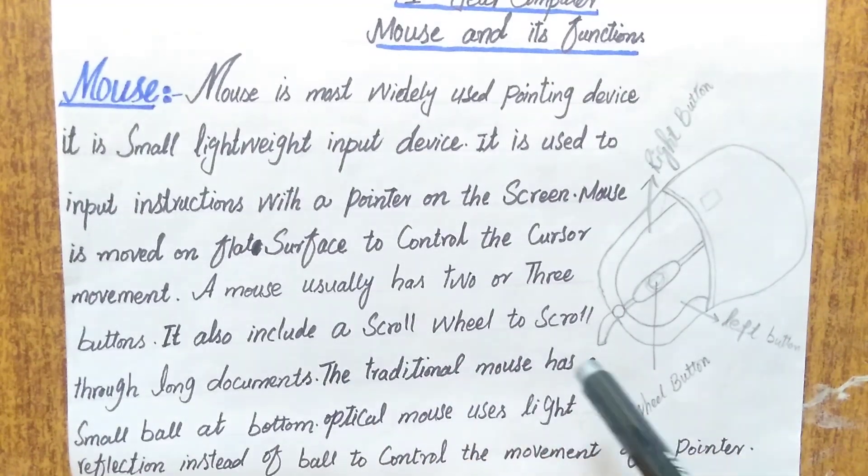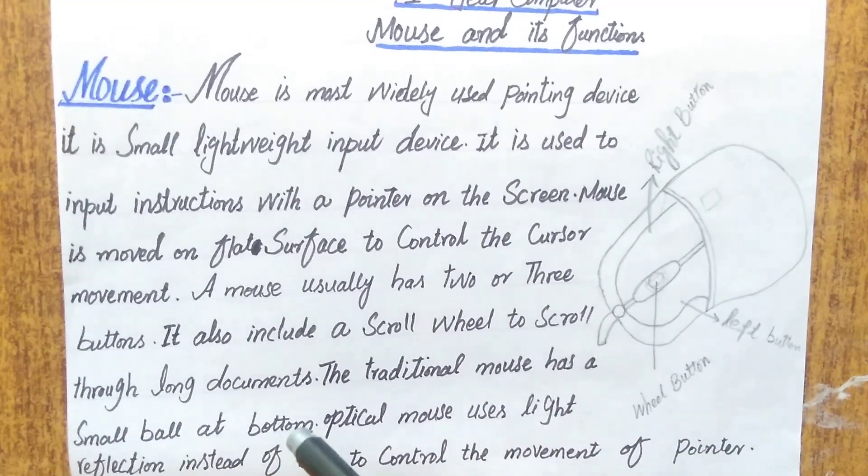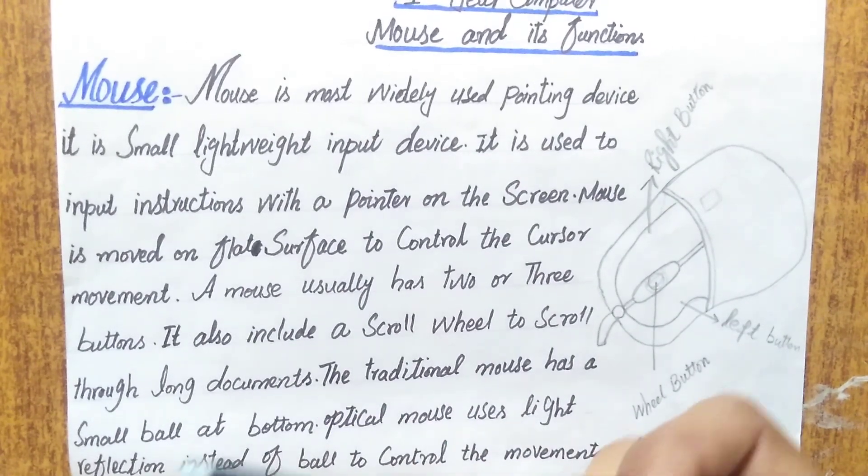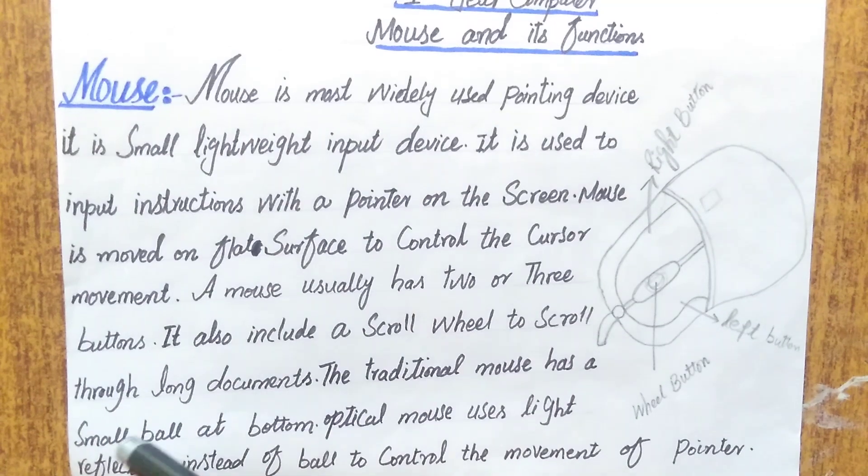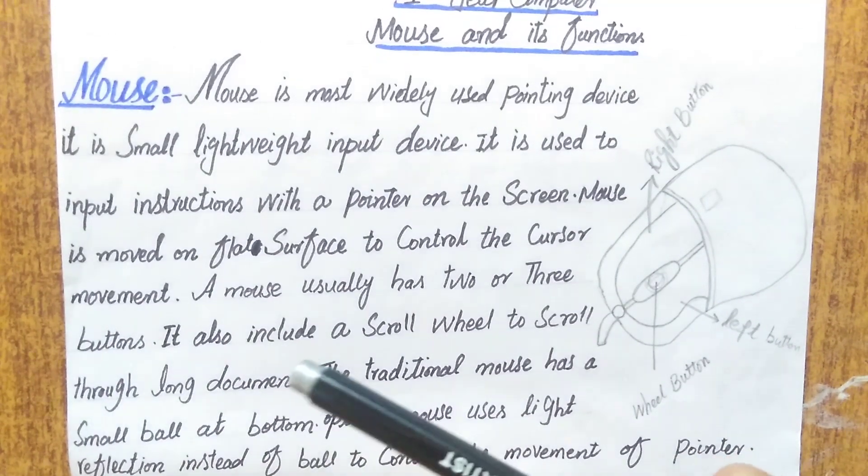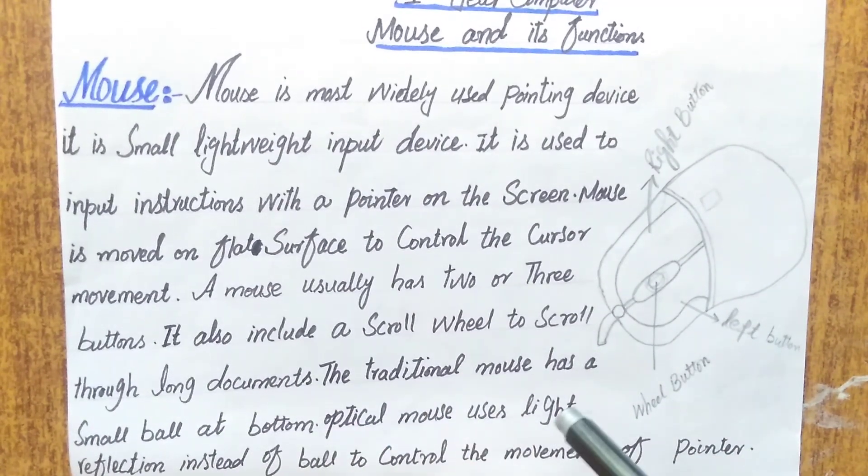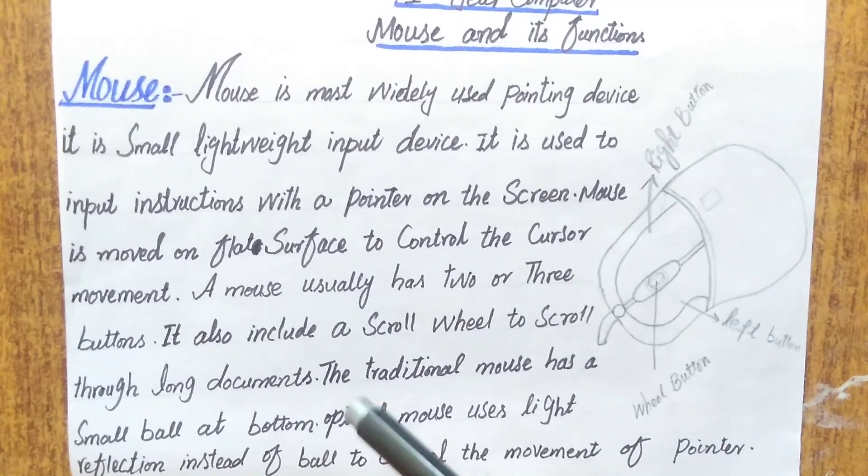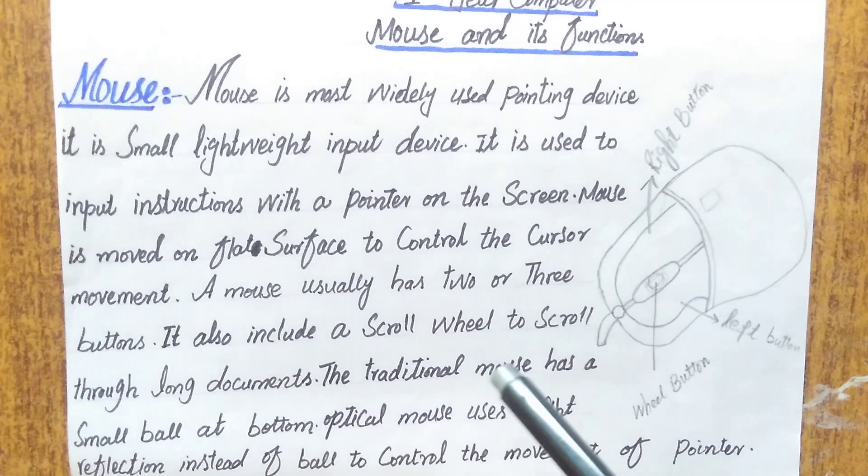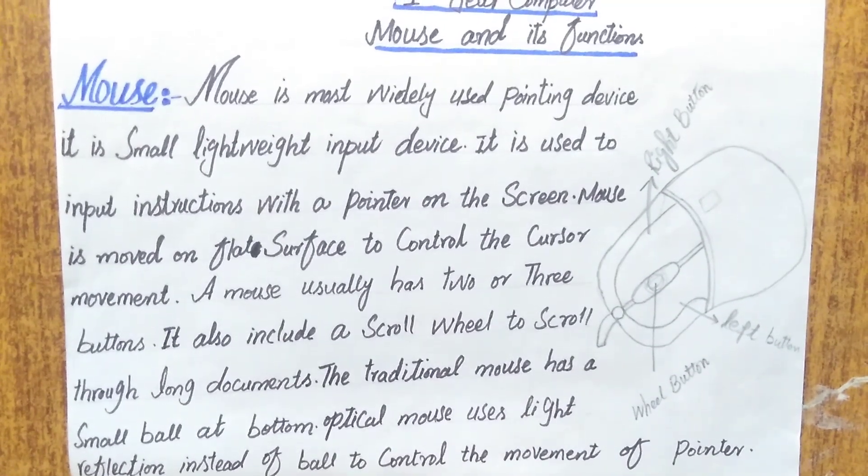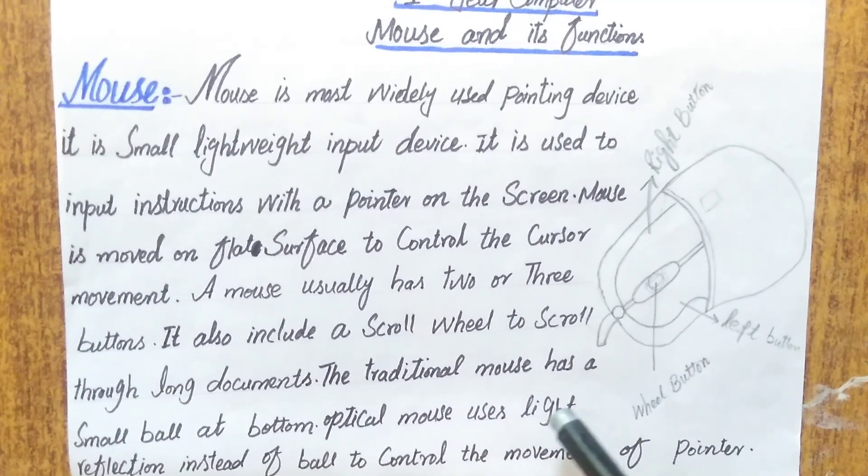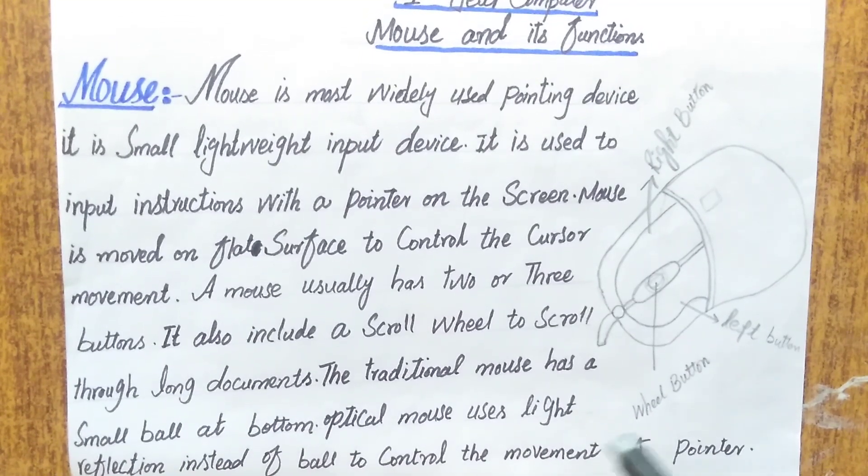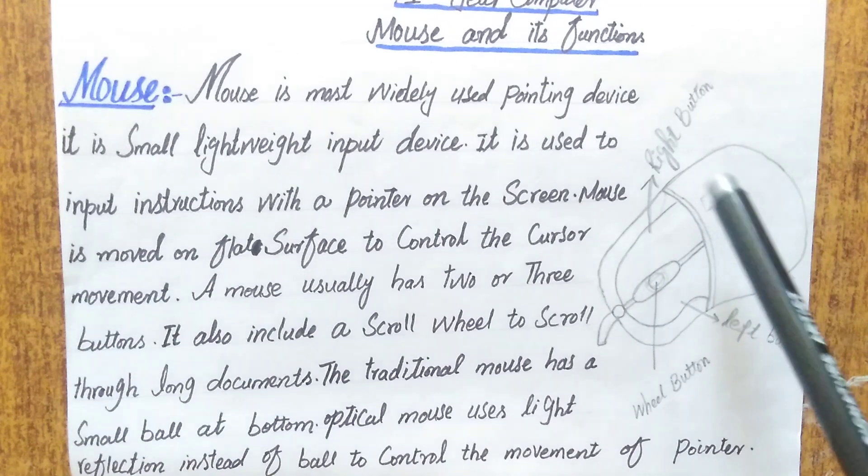Traditional mouse has a small ball at bottom. Optical mouse uses light reflection instead of a ball to control the movement of the pointer.